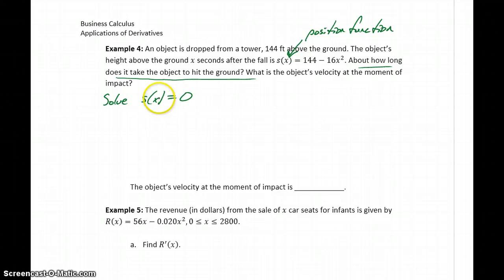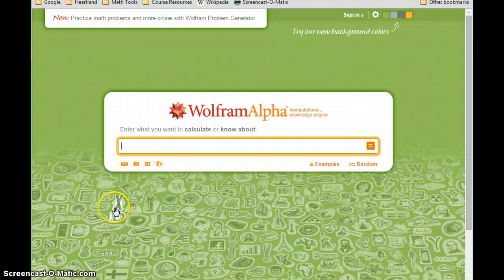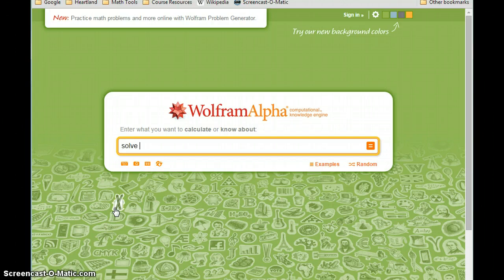Solving that for x will give us the time when our position is exactly zero, or at ground level. Since we want to solve our position function equal to zero, we can ask WolframAlpha to solve 144 minus 16x squared equal to zero.